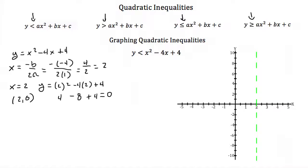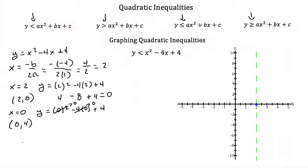I can plot that — it's right here on the x-axis. Now we're going to need some other points. I'm going to find the y-intercept, which occurs when x equals 0. Plugging that in gives y equals 0 squared minus 4 times 0 plus 4, which is just y equals 4. So we have the point (0, 4). I'm also going to plug in x equals 4, giving y equals 4 squared minus 4 times 4 plus 4, which equals 4. So we have the point (4, 4).